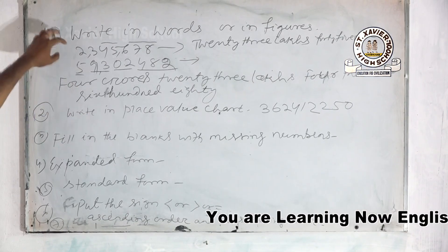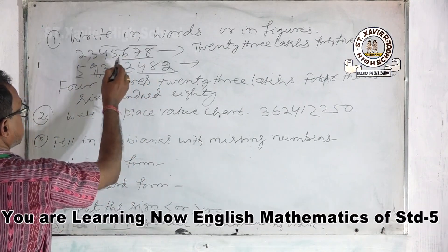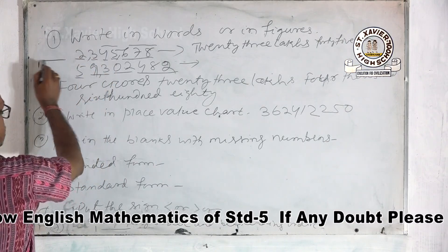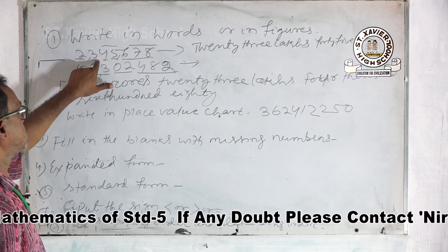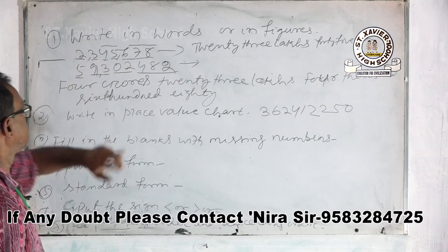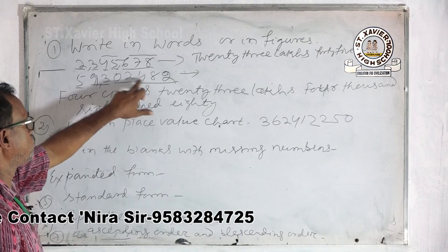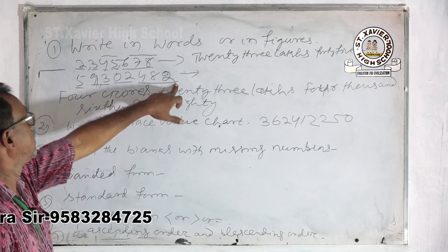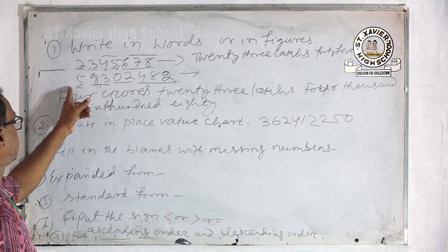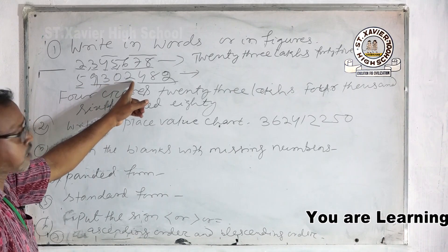To write in words in the Indian way, read: ones, thousands, ten thousands, lakhs, ten lakhs, then crores. For example: twenty-three lakhs, forty-five thousand, six hundred seventy-eight; and five crores, ninety-three lakhs, two thousand, four hundred eighty-two. In the international way: fifty-nine million, three hundred two thousand, four hundred eighty-two.